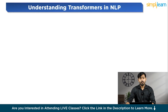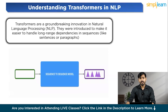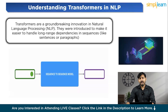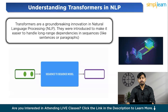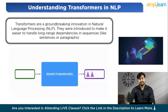Let us start by understanding what exactly Transformers are. Basically, Transformers are a groundbreaking innovation in natural language processing. They were introduced to make it easier to handle long-range dependencies in sequences like sentences or paragraphs. Unlike older models such as recurrent neural networks and convolutional neural networks which process input sequentially, Transformers use a mechanism called self-attention to analyze the entire input at once. This allows them to handle large amounts of data more efficiently and understand relationships between distant words in a sequence better.